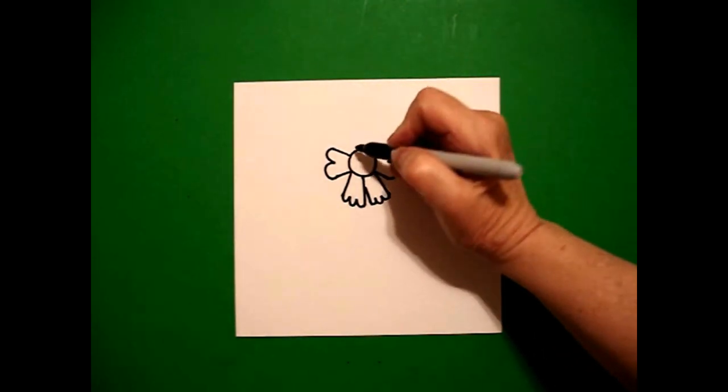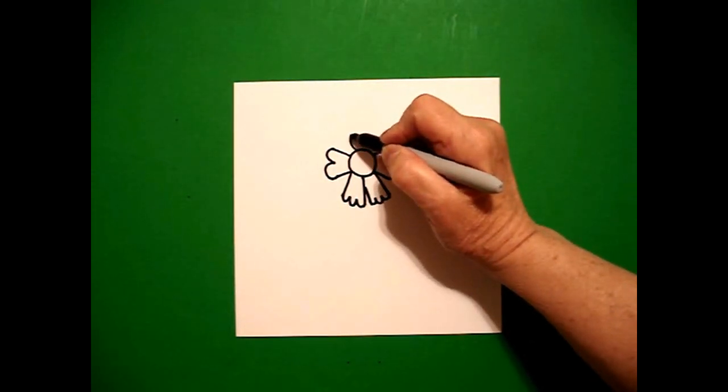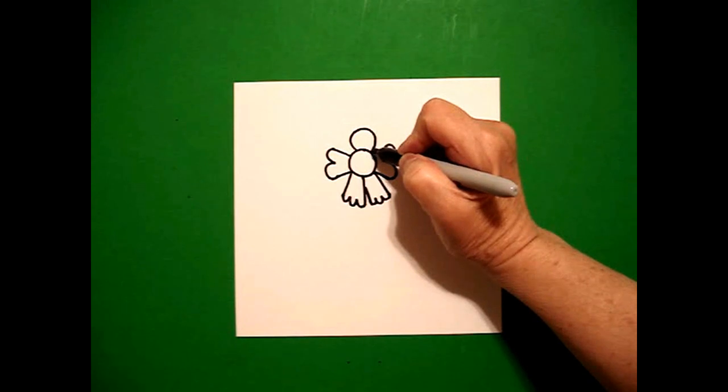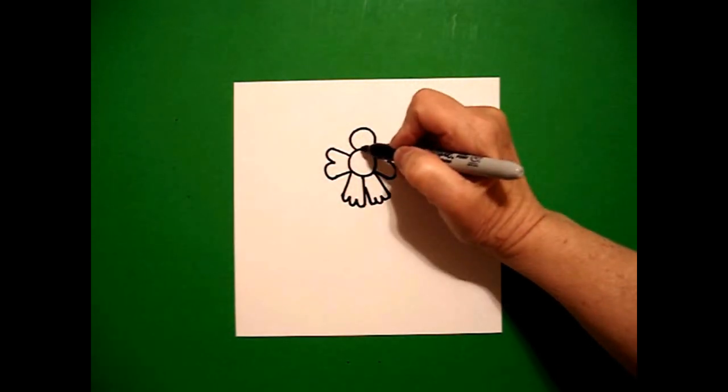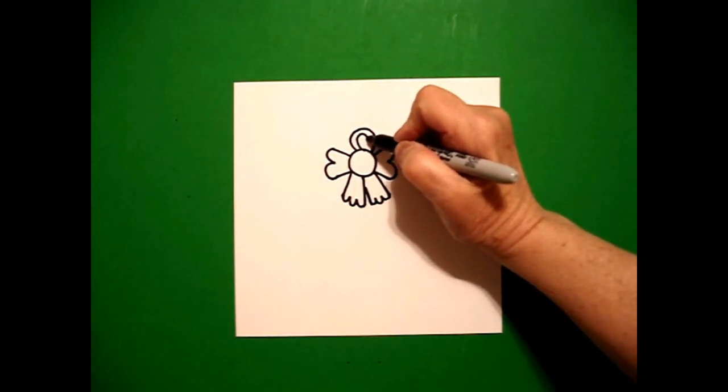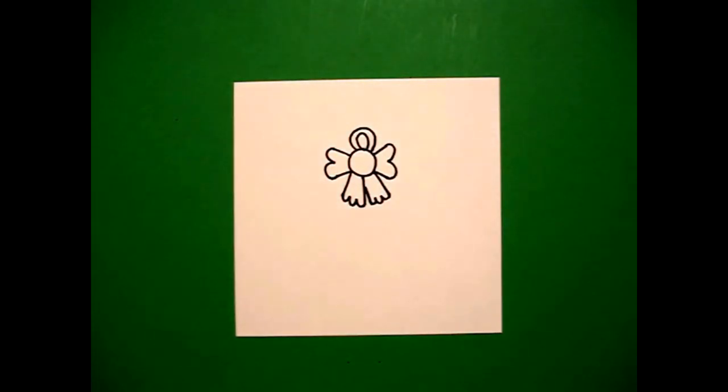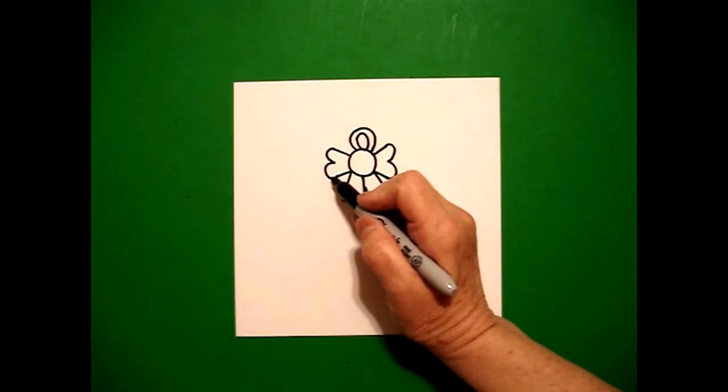I come all the way up to the top and I draw one curve line, connect. And then I draw another curve line inside. Coming over on the left right here, I'm going to draw a slightly curved line down and out and stop.